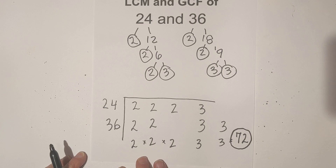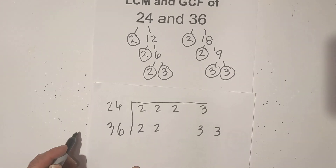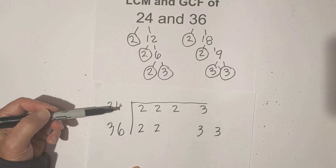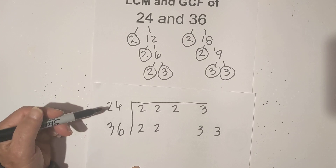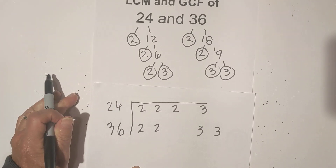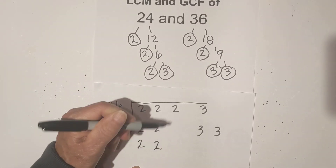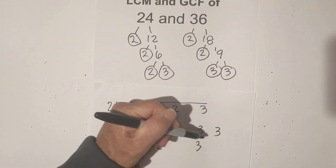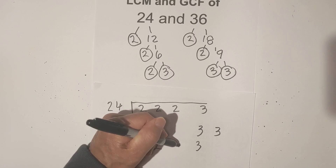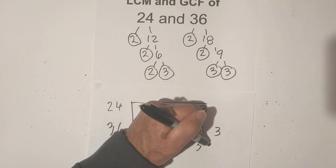Now you can use the very same chart in order to find the greatest common factor. For the greatest common factor you use this rule: you only multiply numbers if you have 2 in the same column, because you are trying to find the numbers that divide into them evenly. So we have a 2, we have a 2. There is not 2 in this column so I won't use that. There is 2 here and there is only 1 there. So now all I do is just multiply these numbers together: 2 times 2 is 4, 4 times 3 is 12.